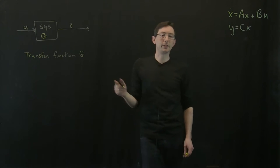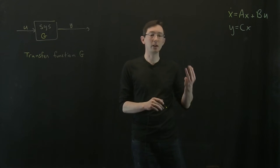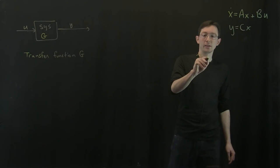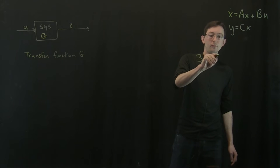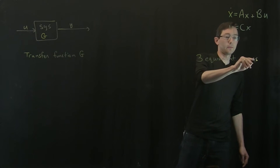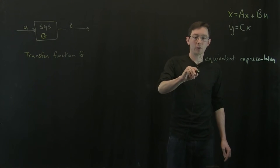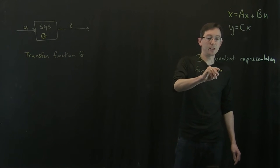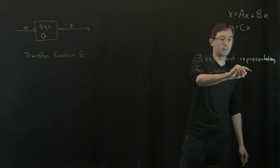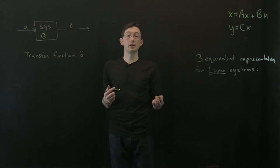For this transfer function g, for linear systems there are three equivalent representations. I want to write this down — this is really important. These are three equivalent representations for linear systems, and it's really important that we're talking about linear systems.